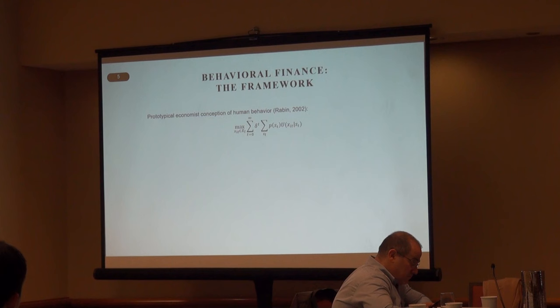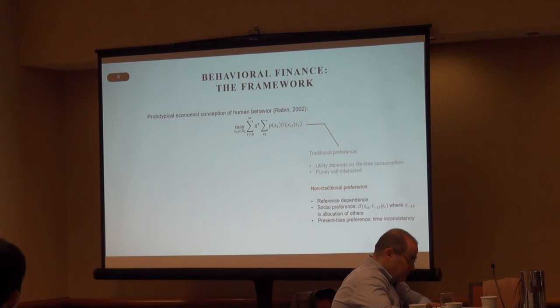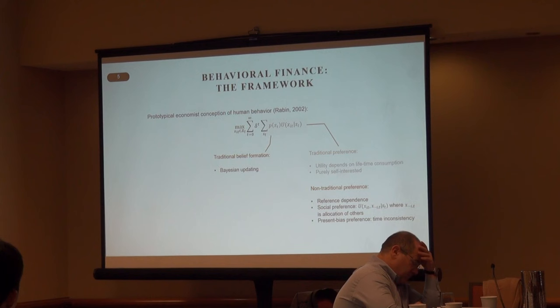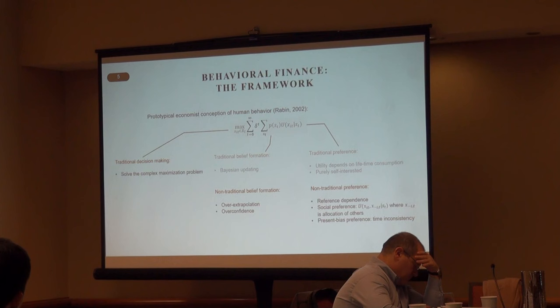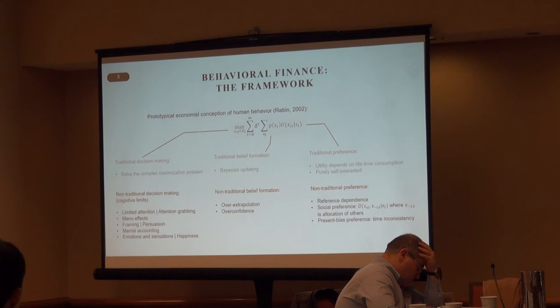The first dimension is preference. The traditional way assumes utility depends on lifetime consumption and that everyone is purely self-interested. The non-traditional way thinks about reference-dependent preferences and social preferences. The second is belief formation: traditional models assume Bayesian updating, while non-traditional approaches consider over-extrapolation or overconfidence. The third is decision-making: traditional models assume people can solve complex maximization problems, whereas non-traditional approaches consider cognitive limits.